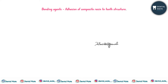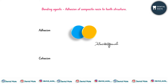Bonding agents help in the adhesion of composite resin to the tooth structure. Adhesion means the combination or attachment of two different structures together, whereas cohesion means when two similar molecules combine together. So attraction between different molecules is adhesion, and attraction between similar molecules is cohesion.